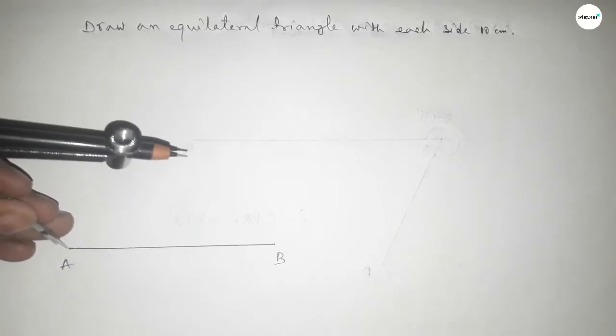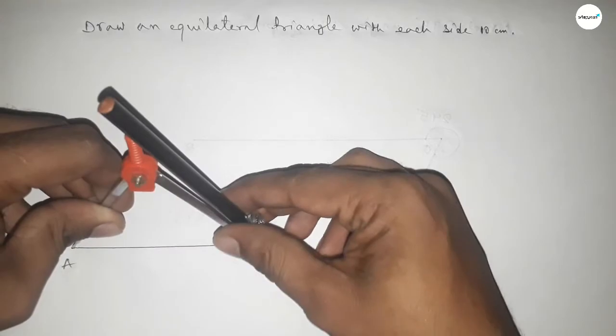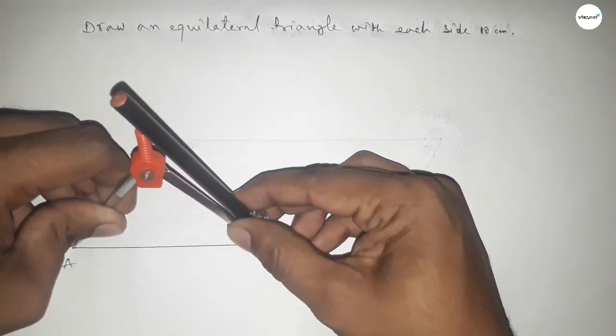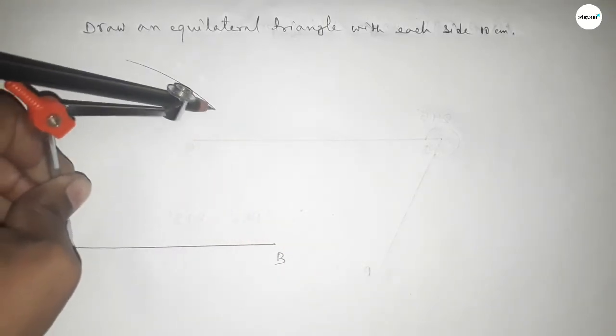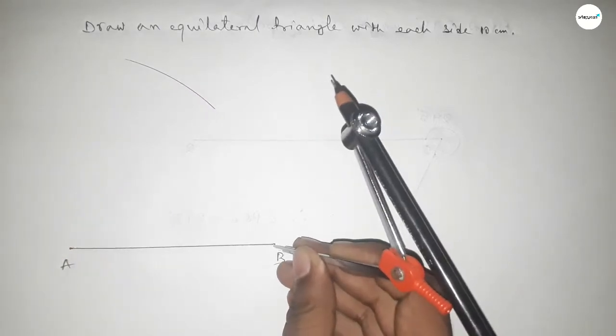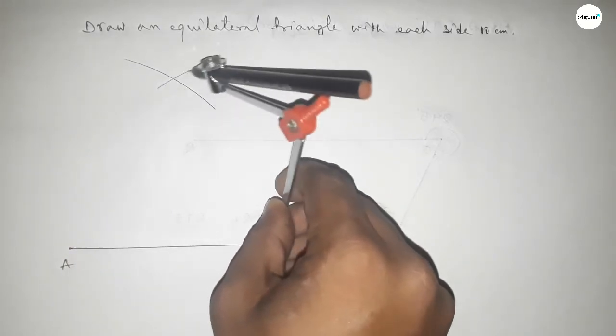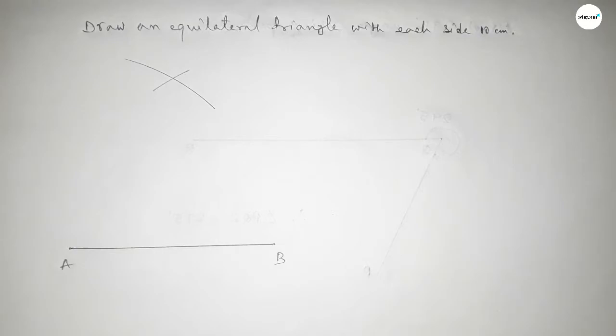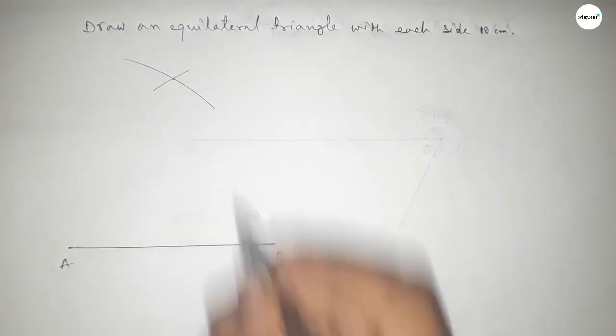Now taking the length AB by compass by this way and drawing here an arc with same length, and putting the compass here and cut here. So both the curves intersect at a point.